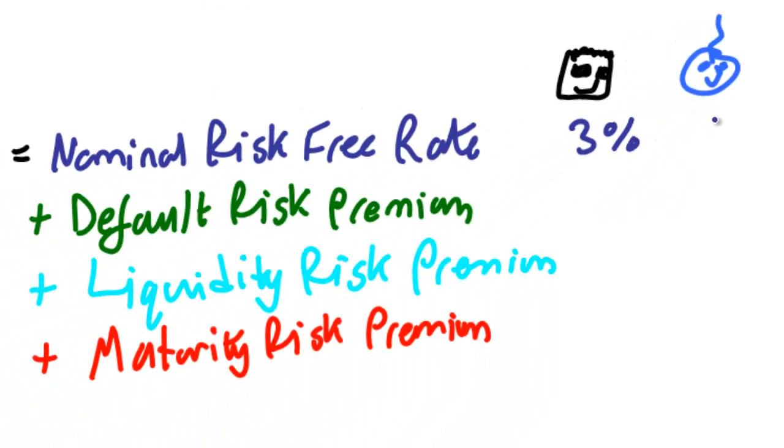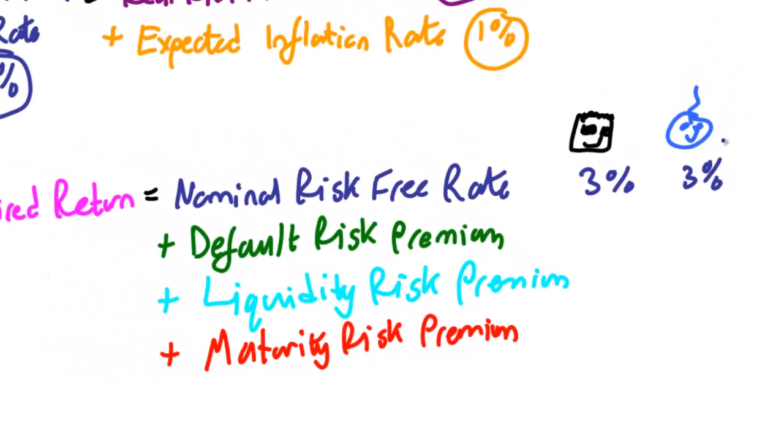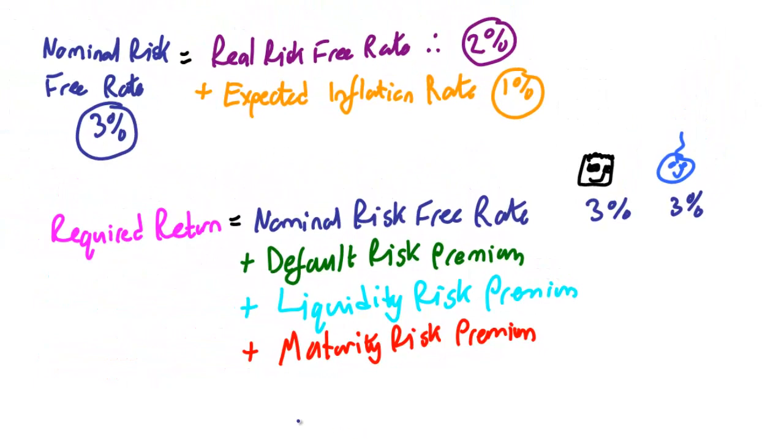So you decide to invest in either Andy's dodgy jet skis or Sean's luxury yachts. Let's get on then to the second equation, but now we can fill in the first part. The nominal risk-free rate for both Andy's company and Sean's company is the same. It's 3%. So what about this default risk premium?